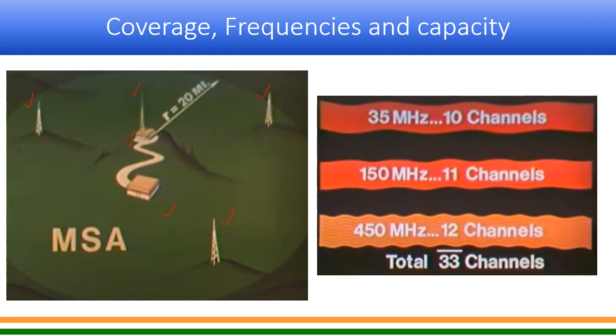At that point in time, they were using the lower side of the spectrum. Initially, about 35 MHz band with 10 channels was used. Later on, 11 more channels in the 150 MHz band were allocated. And later on again, 12 channels from 450 MHz were allocated. So a total of 33 channels over a period of time was allocated by the FCC in the USA for mobile service, long back during the 1940s.